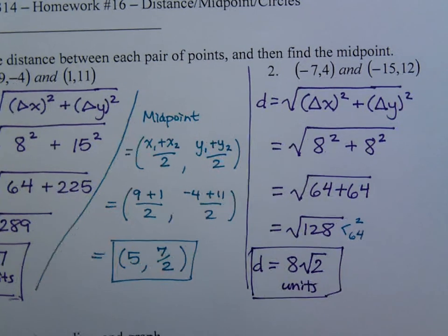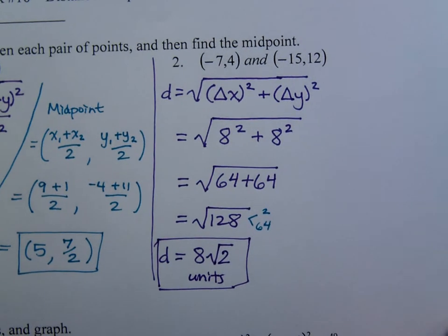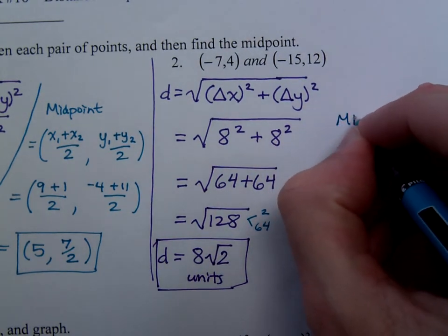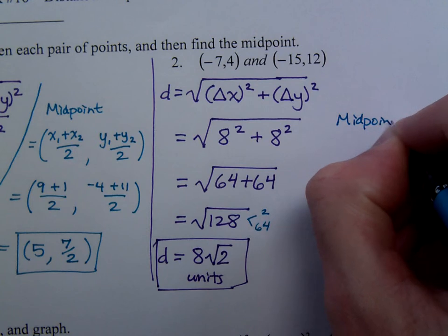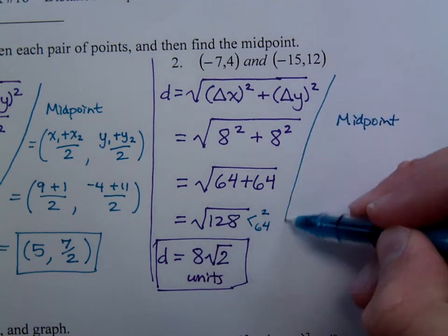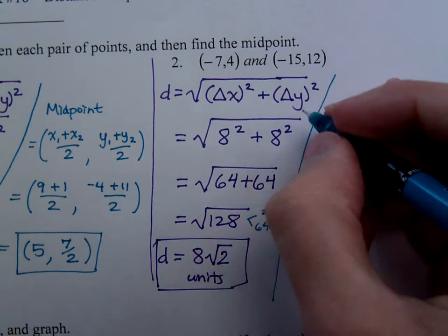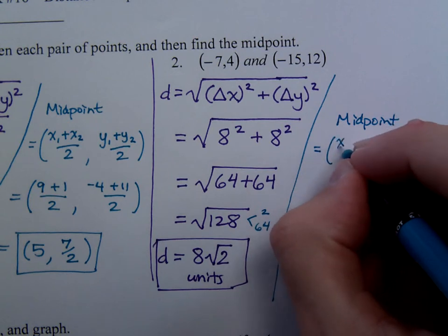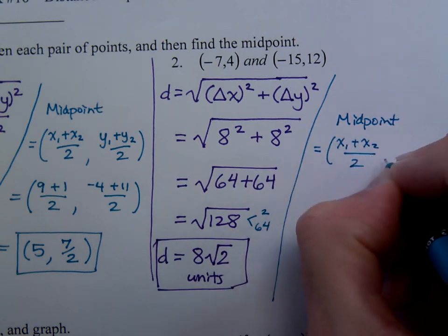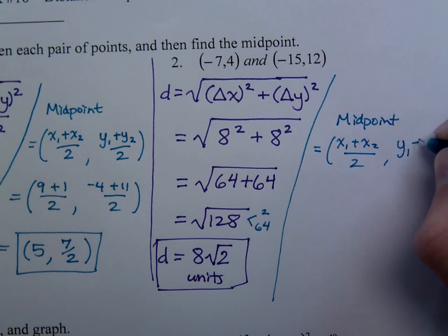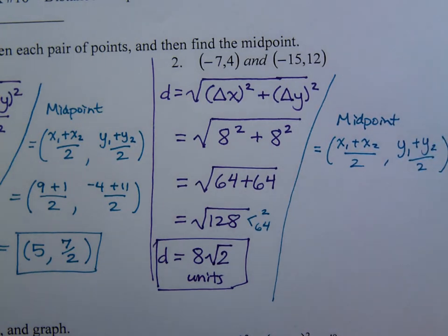And then we're going to find the midpoint, just like we did before. So remember, the midpoint is the average of the x-coordinates and the average of the y-coordinates.